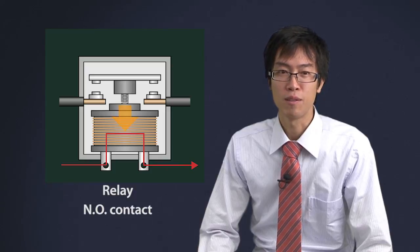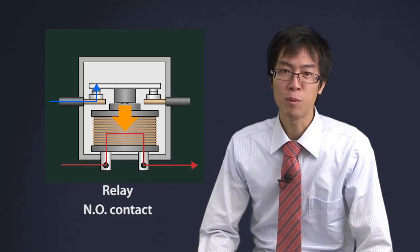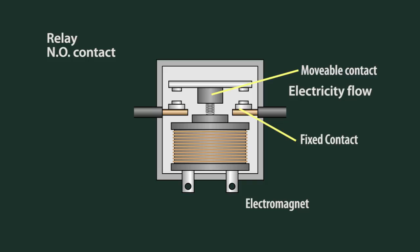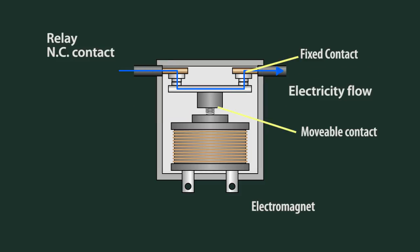Now about relays. A relay is a device that pulls a movable contact using an internal electromagnet to open or close the contact. A Normally Open Contact relay is the same as a push button that is open by default. In a Normally Closed Contact relay, the fixed contact is on the other side. It operates exactly opposite of Normally Open.